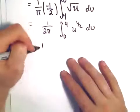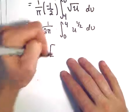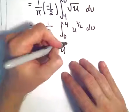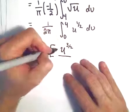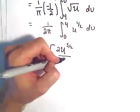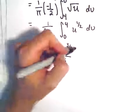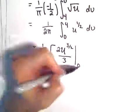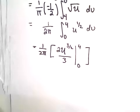So we'll have 1 over 2 pi. If we integrate, we'll get u to the 3 halves. Dividing by 3 halves is the same as multiplying by 2 thirds. Too many fractions. And then this is going from 0 to 4.